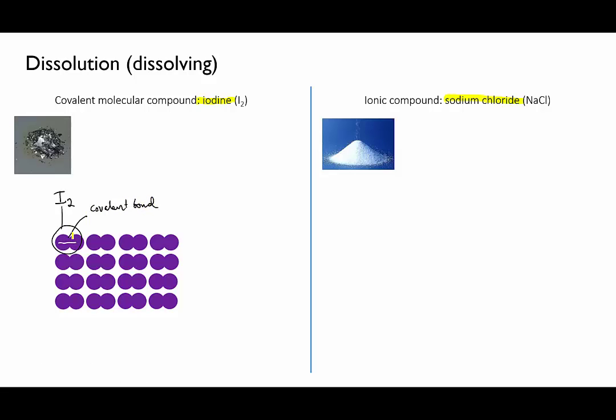Sodium chloride, an ionic compound, is composed of alternating sodium ions and chloride ions in a lattice.